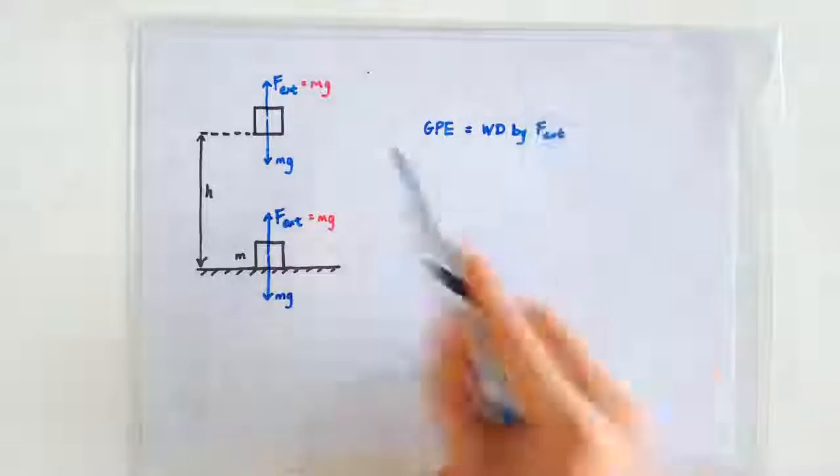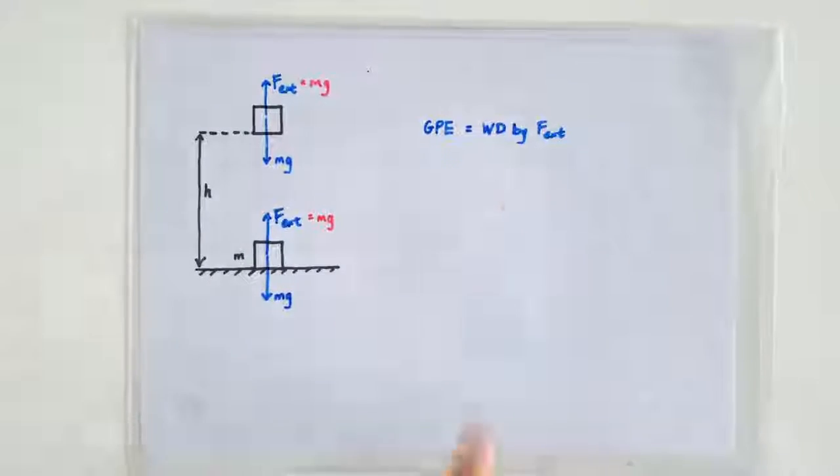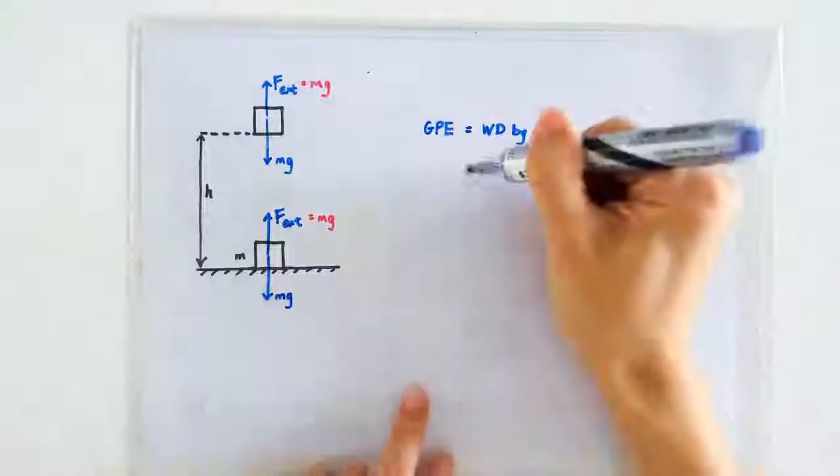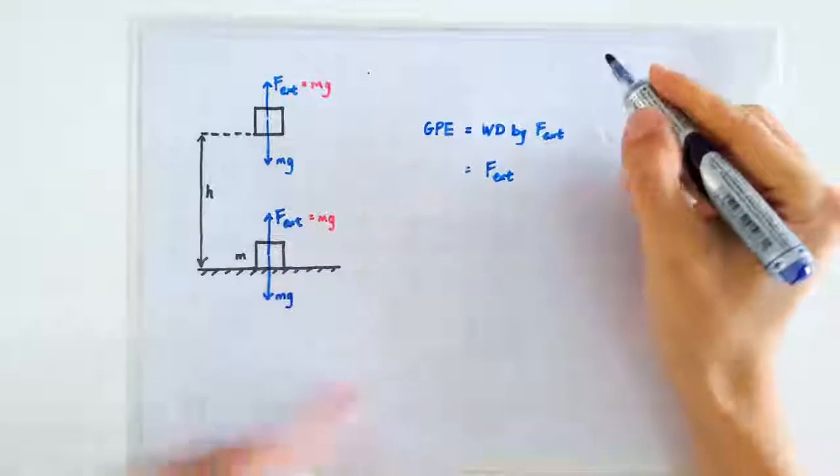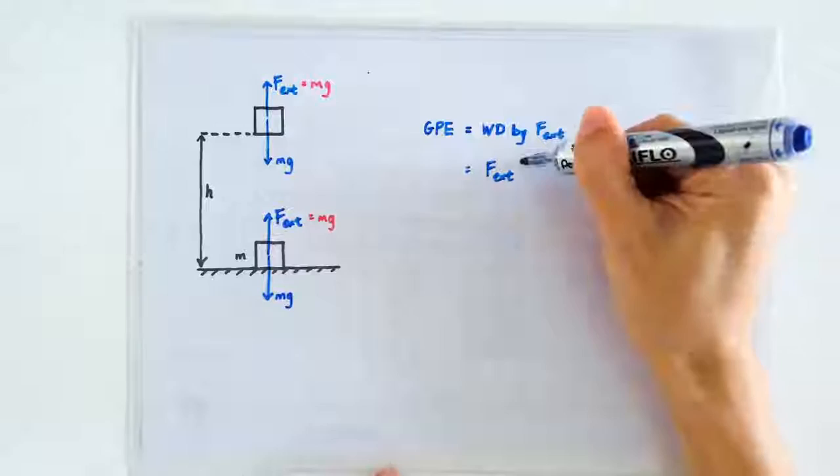And only then this equation will be valid. So the work done by the constant force can be written as that constant force times the displacement, H.